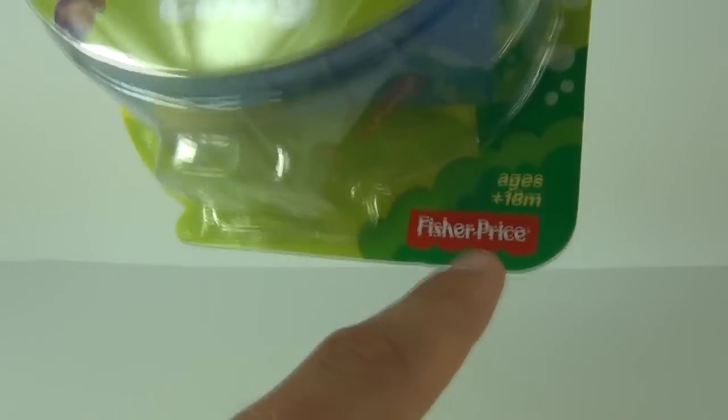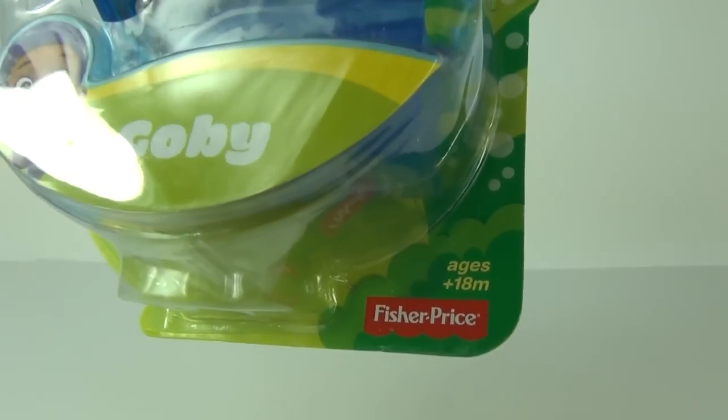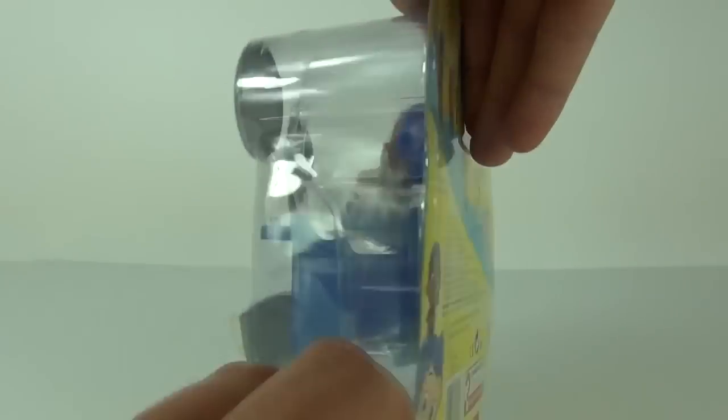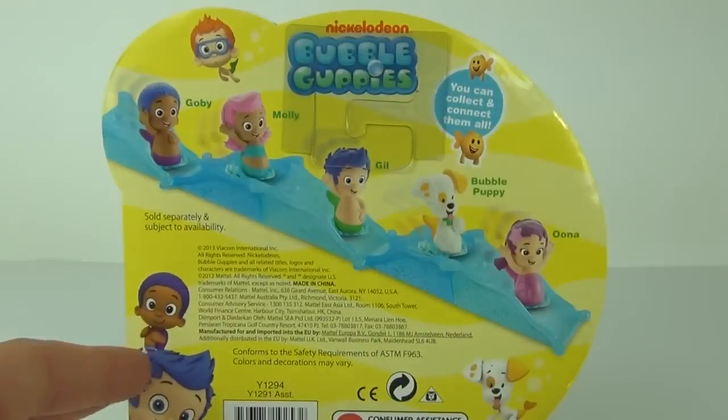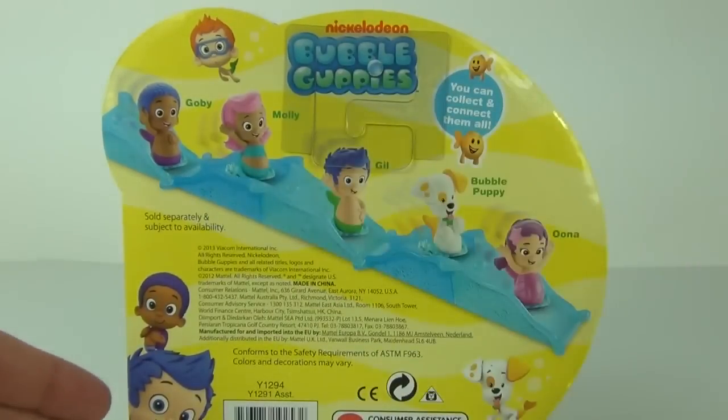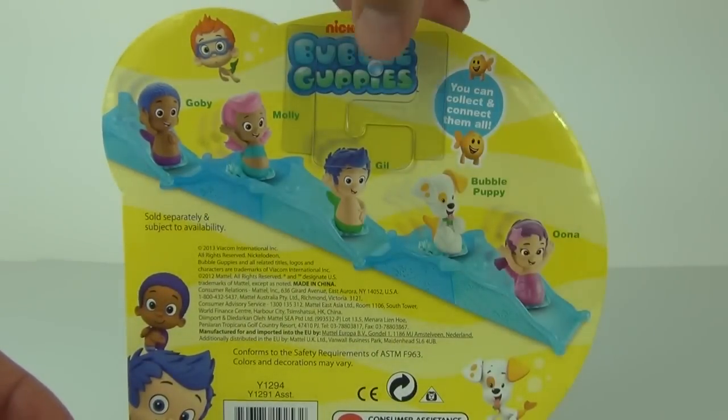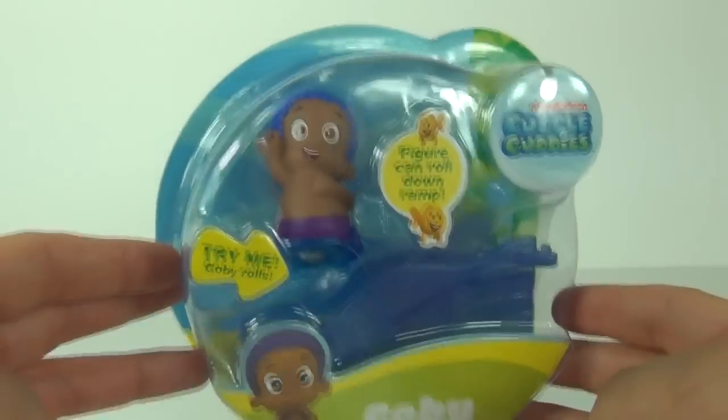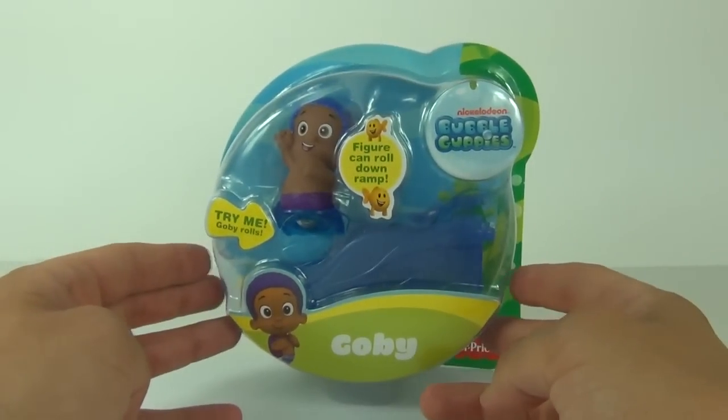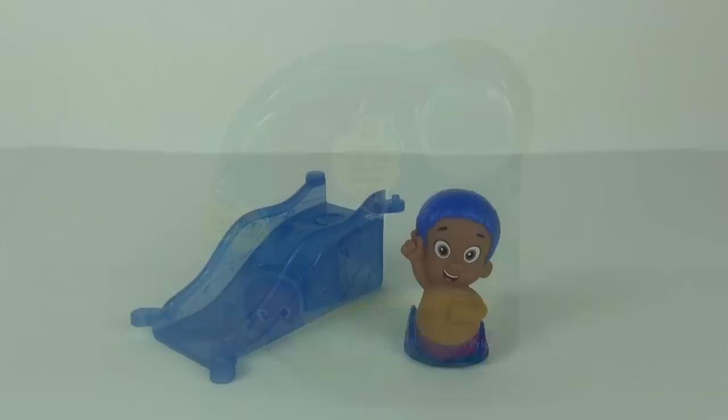Now these are made by Fisher-Price and the age recommendation is plus 18 months. On the back you can see that slide with all the pieces fixed together and some more of the characters that you can collect in this line of toys. But let's open Goby up and take a closer look.